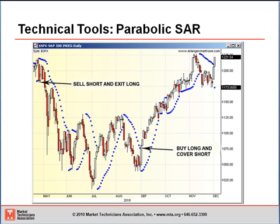That's a key point to remember for all the trend-following indicators in this video series: they do not work well in choppy, trendless markets. But if you go to the period of September where the system basically went long, you will see a very nice large ride once the market started to trend again. This chart illustrates the parabolic well: A, a good short trade; B, a short long trade; and C, the fact that the indicator doesn't work as effectively in a trading range.